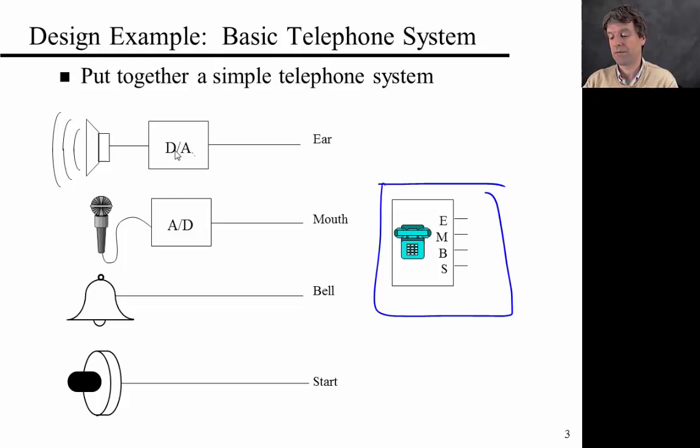There's an earpiece up here that allows you to listen to what other people say. There's a mouthpiece you can talk into and talk to the people. There's a bell that rings when somebody's trying to call you. And there's a start button that you push when you're trying to call somebody else. And importantly, as you'll see, this is a very old system that works with a phone operator.